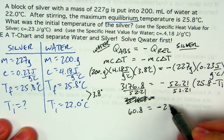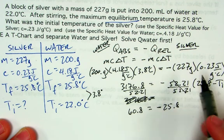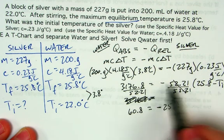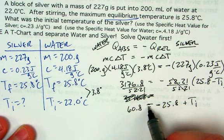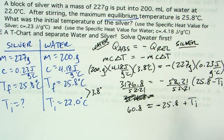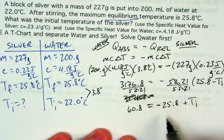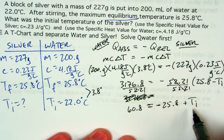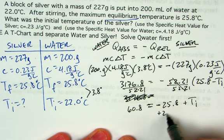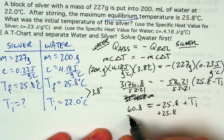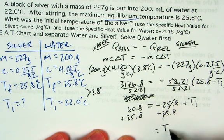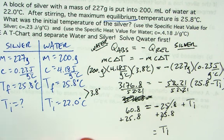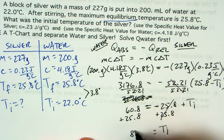Now I'll distribute the negative sign, giving negative 25.8 plus T-initial. Then I'll add 25.8 to both sides — this cancels on the right. So the initial temperature equals 60.8 plus 25.8, which is 86.6 degrees Celsius.